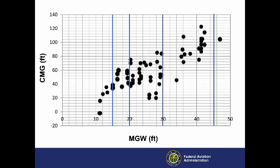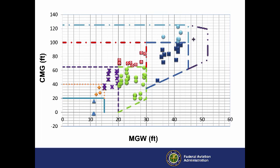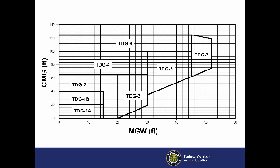To avoid constructing large fillets at airports where we expect only shorter airplanes to operate, we divided three of these taxiway widths by CMG, considering both maximum and minimum CMG. As shown here, these groups are TDG-1A, TDG-1B and TDG-2, TDG-3 and TDG-4, TDG-5 and TDG-6, and finally TDG-7, which includes only one airplane, the Airbus A380. When we remove the data points, we have the taxiway design graph as shown in Advisory Circular 150-5300-13, Airport Design.